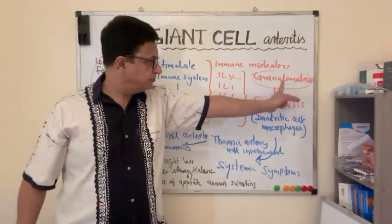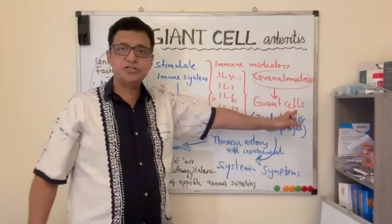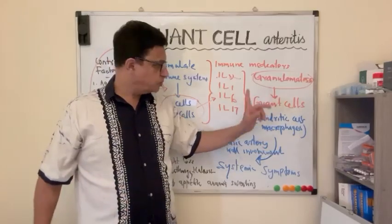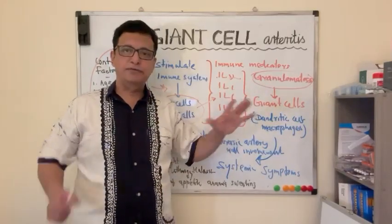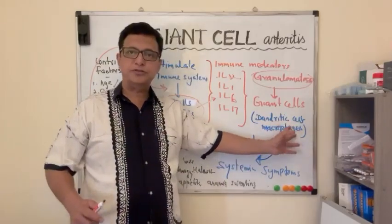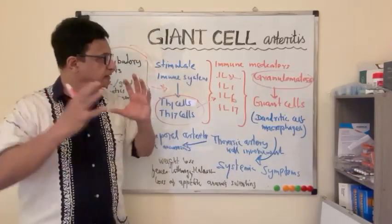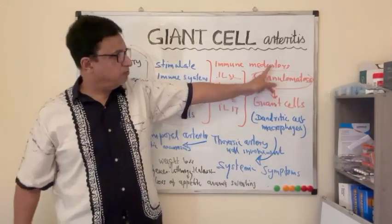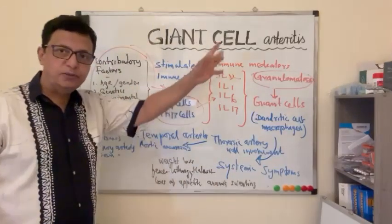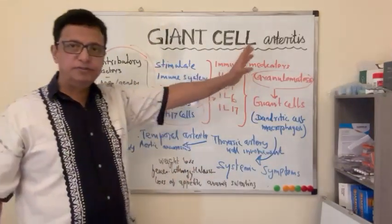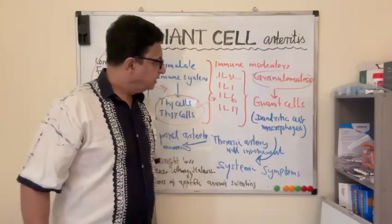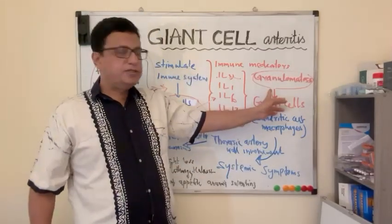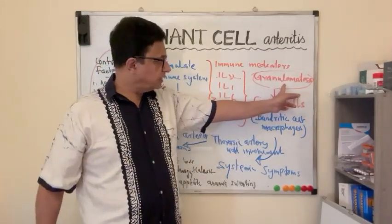Major arteries of the thoracic cavity form giant cells in the wall of the major arteries. What are the giant cells? Giant cells are the fusion of dendritic cells and macrophages, and they infiltrate the vascular wall to form granulomatosis. It is irregularly formed skip lesions, and as a result we can get abnormalities of the vessel wall of the thoracic arteries.